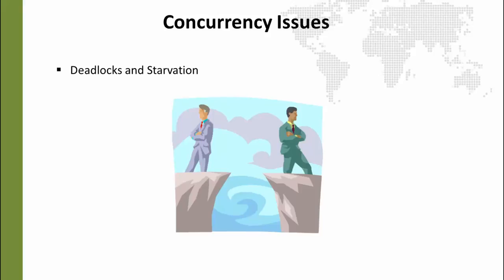The other big concurrency issues that a lot of people face are deadlocks and starvation. There are more issues than this, but we are going to cover these two because they are the big issues beginning Java developers encounter.